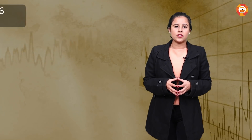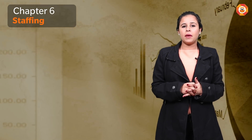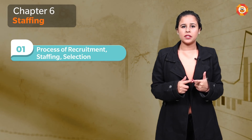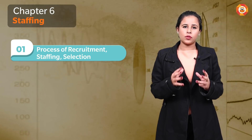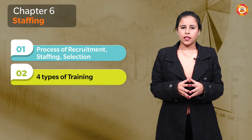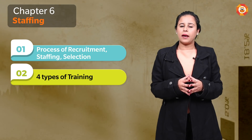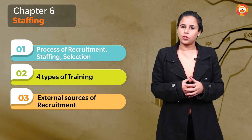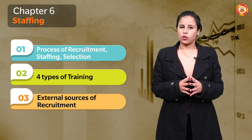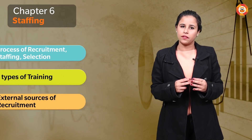Chapter 6 is Staffing. Since organizing, staffing, and directing have higher weightage, you need to cover more topics. In staffing, you need to know all three processes: recruitment, staffing, and selection — step by step in chronological order. Then there are types of training — only four types are in your course. For recruitment, all the external sources of recruitment are also very important. Cover process, external recruitment, and types of training — you will definitely get a question on staffing.